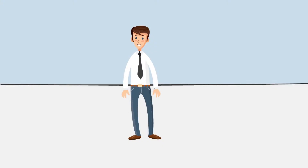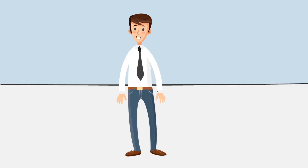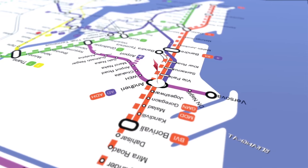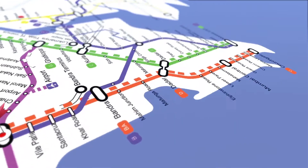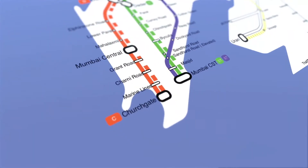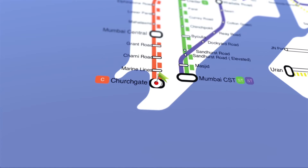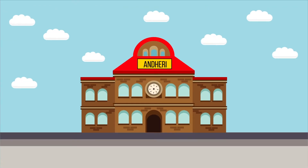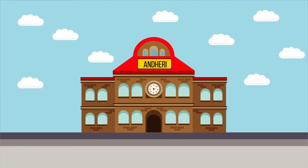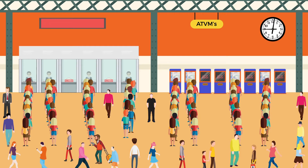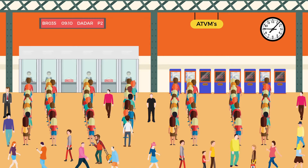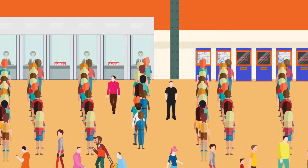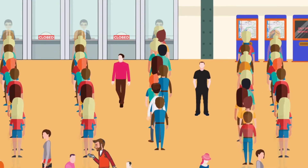Hello friends, meet Amrit. Amrit is in a hurry to travel from Ontario Railway Station to the Churchgate Railway Station. He goes to Ontario Station ticket counter to get a ticket up to Churchgate. There, he finds long queues at all ticket windows and ATM machines. Unfortunately, he has no option left other than standing in a queue to get a ticket.